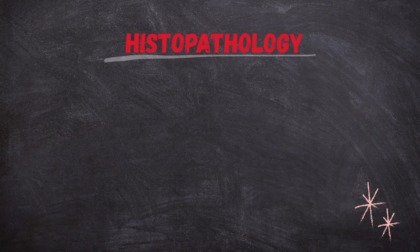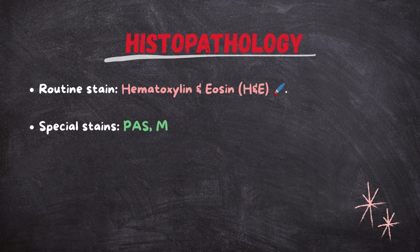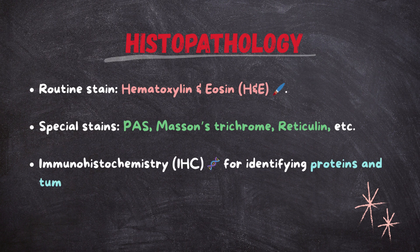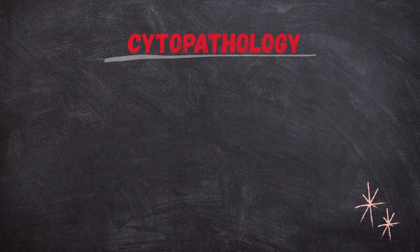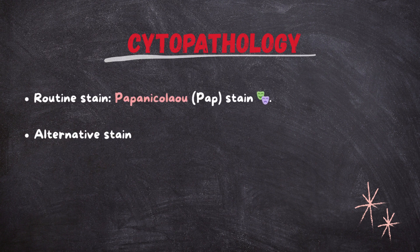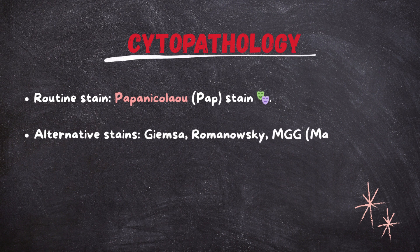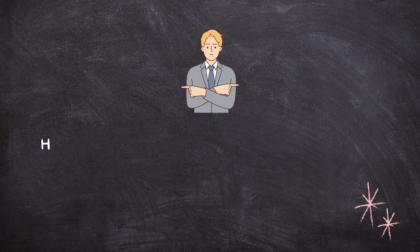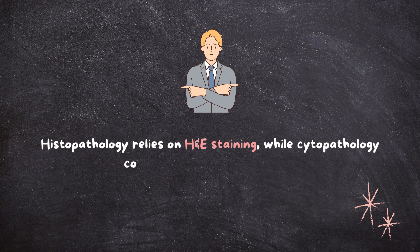Histopathology routine stain is hematoxylin and eosin (H&E). Special stains include PAS, Masson's trichrome, reticulin, etc. Immunohistochemistry (IHC) is used for identifying proteins and tumor markers. Cytopathology routine stain is the Papanicolaou (Pap) stain. Alternative stains include Giemsa and Romanovsky (MGG - May-Grünwald-Giemsa). Immunocytochemistry (ICC) is used for protein markers. Key difference: histopathology relies on H&E staining while cytopathology commonly uses the Pap stain.